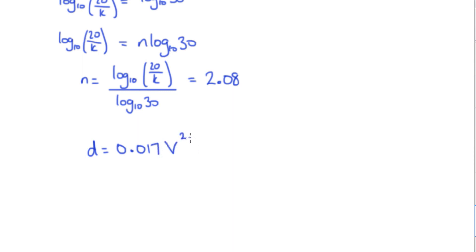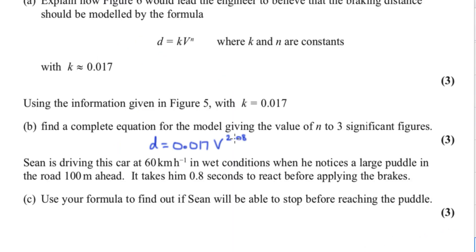Sean is driving this car at 60 kilometers per hour in wet conditions when he notices a large puddle 100 meters ahead. It takes him 0.8 seconds to react before he applies the brakes.